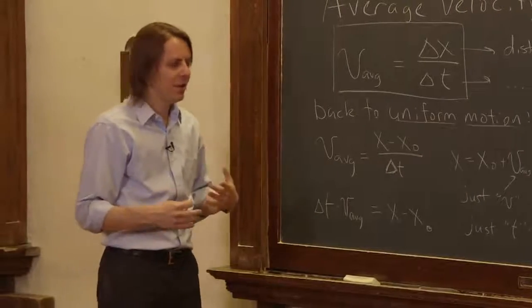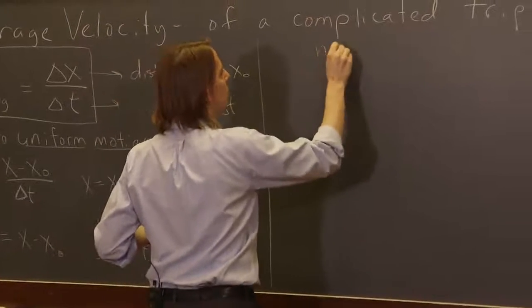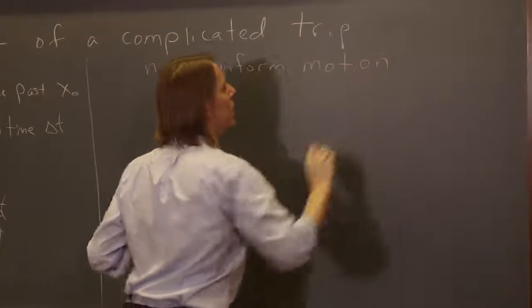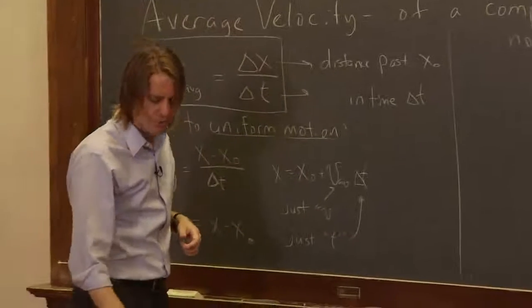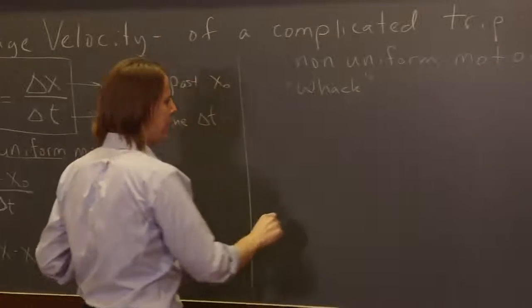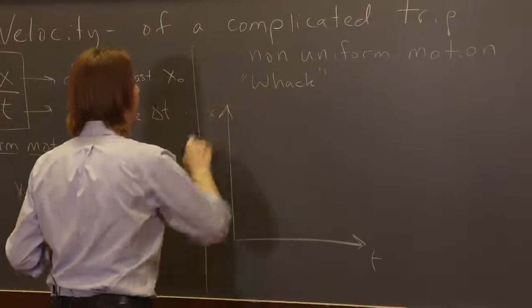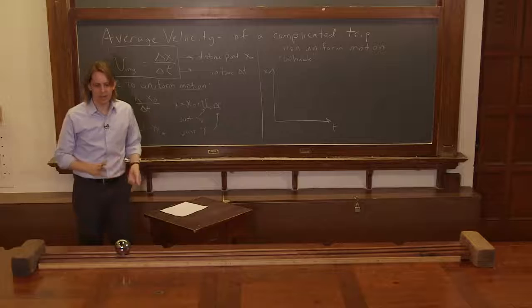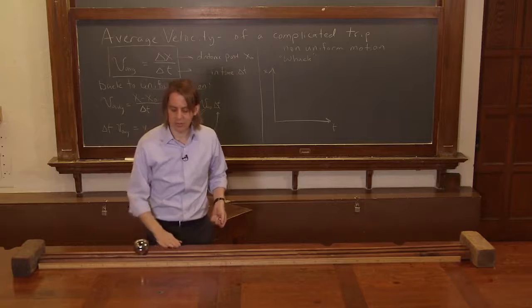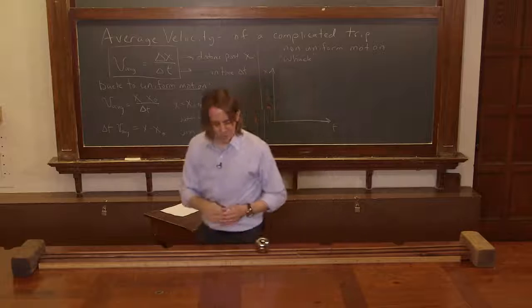But now, let's show you the reason we have the concept of average velocity, and that is to look at non-uniform motion. So non-uniform motion, let's do two cases. Let's do whack. The first case is called whack. And we're going to draw its position time curve like this. There is x and there is t. And it's called whack because we're going to get Hal here, and we're going to get him going at a slow velocity, and then at one point, we're going to whack him and make him go faster.